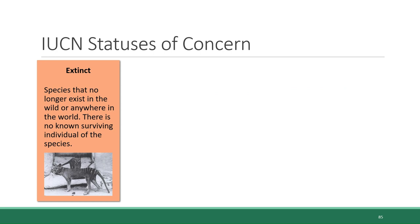On one end of the IUCN classification spectrum are organisms that are already extinct — meaning they no longer exist anywhere in the world, not in the wild, not in captivity, not anywhere. A prominent example of an extinct species is the Tasmanian tiger, which was native to Australia, Tasmania, and New Guinea. It went extinct in 1936, when the last known member of its species died at a zoo in Australia.